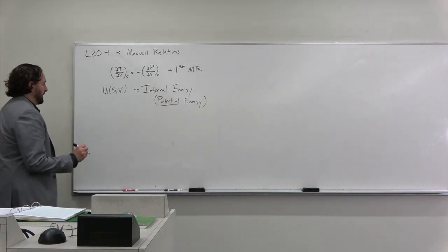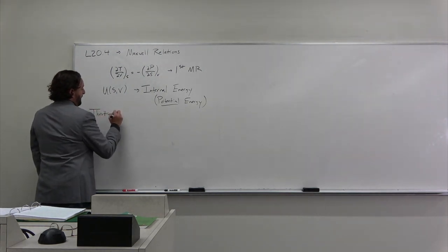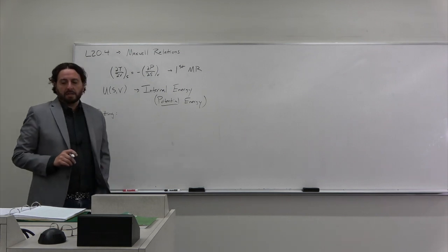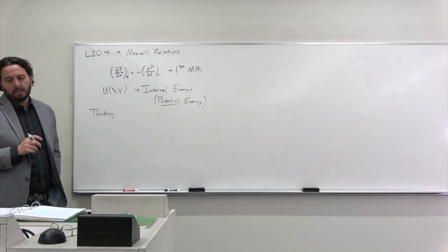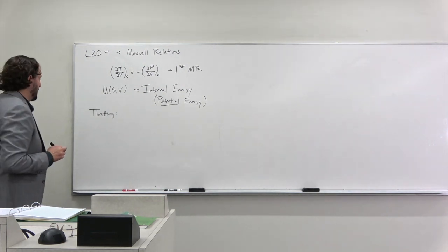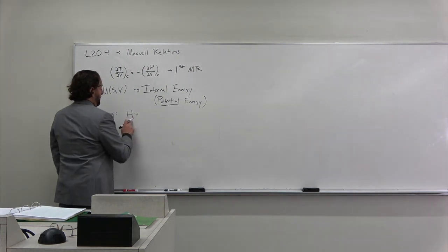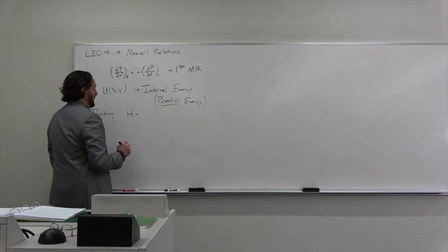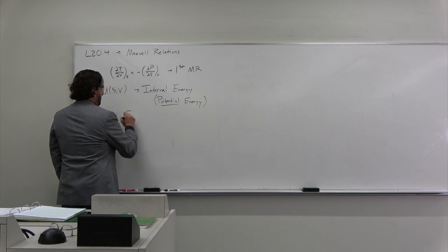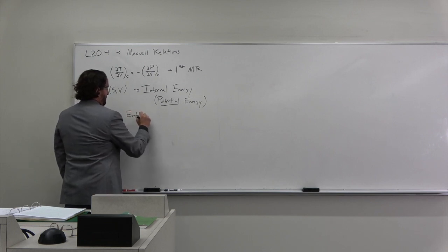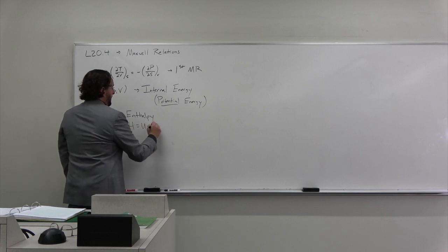Another thermodynamic potential was relevant when we had throttling. Remember the throttling process was an isenthalpic process, so the relevant thermodynamic potential was the enthalpy, which is H equals U plus PV.